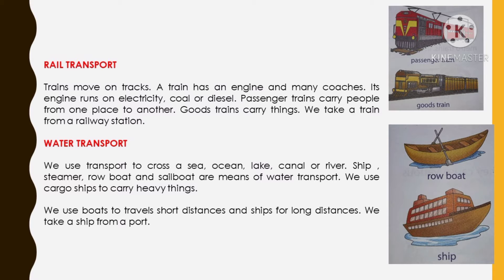Trains can run on coal, diesel, or electricity. Previously we had only coal engines, but now we have electric engines, coal engines and diesel engines. Passenger trains carry people from one place to another — local trains, mail trains and long-distance trains are all passenger trains where we travel from one place to another.